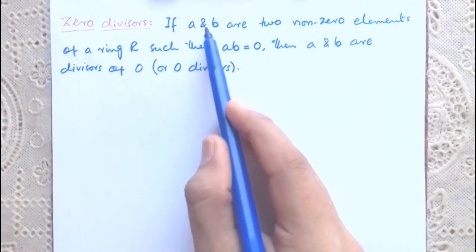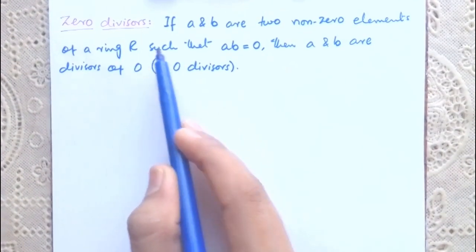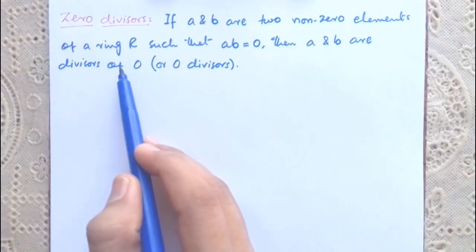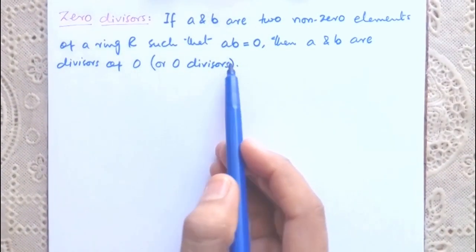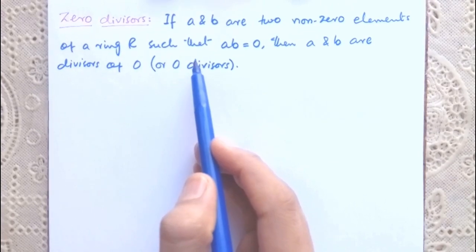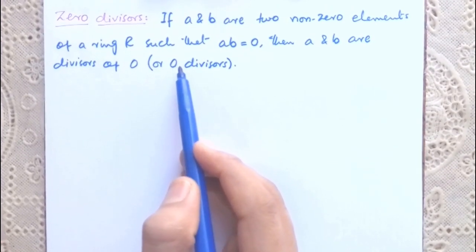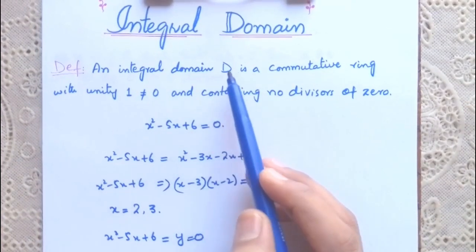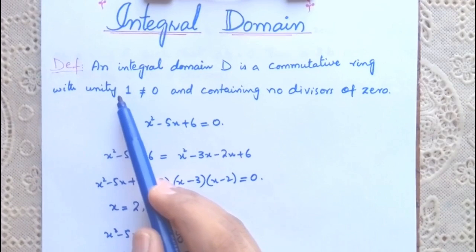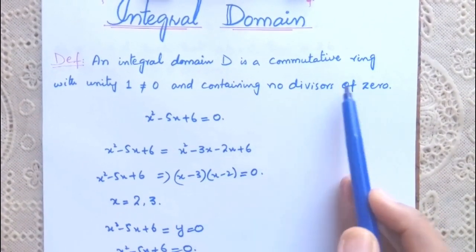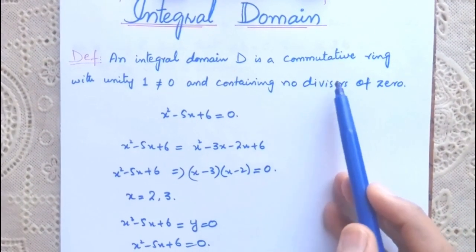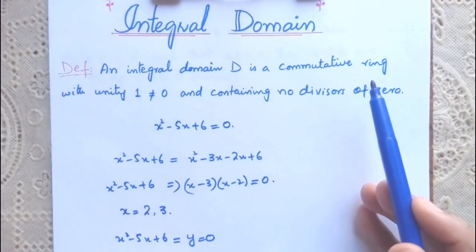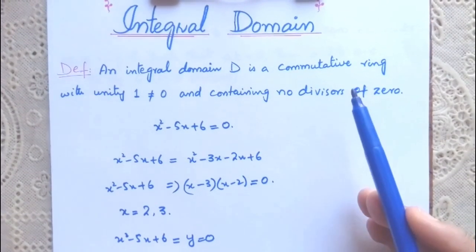Zero divisors: if a and b are two non-zero elements of a ring R such that a·b = 0, then a and b are called divisors of zero, or zero divisors. So if two non-zero numbers have a product of 0, those two numbers are called divisors of zero. Now let's read the definition of integral domain again: an integral domain D is a commutative ring with unity not equal to 0 and containing no divisors of 0. Now let's see a theorem that will help decide whether a given commutative ring with unity is an integral domain or not.